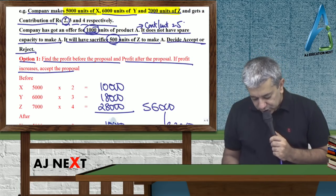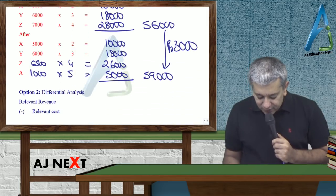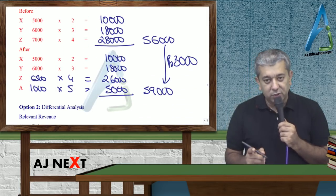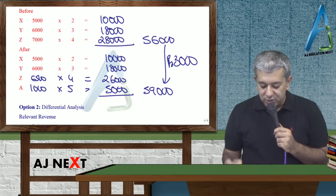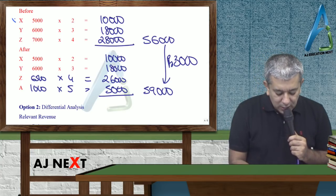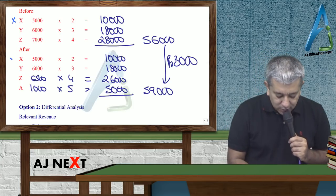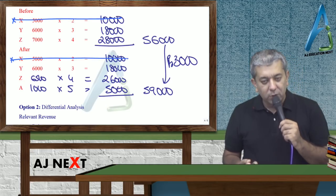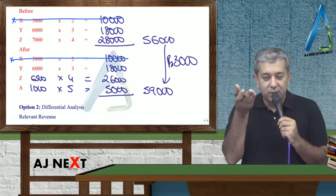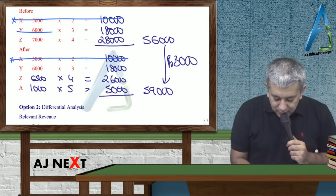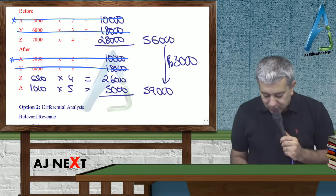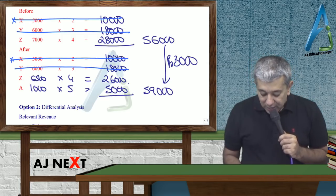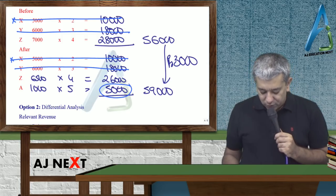Abhi yeh wala question, tum log aise bhi toh solve kar sakti ho. Differential baise. Agar kuch pehle hoota tha, aur agar abhi bhi hooga, toh wo useless hai. Toh, mein X ke baare mein kabhi bhi baat nahin karun ga. Kyunki 10,000 rupiah toh pehle bhi milta tha, abhi bhi milega. 18,000 rupiah toh pehle bhi milta tha, abhi bhi milega. Lekin extra kya milega?